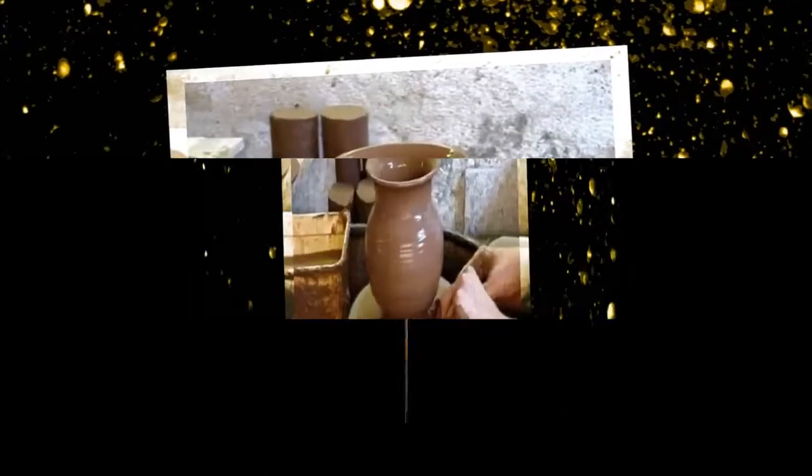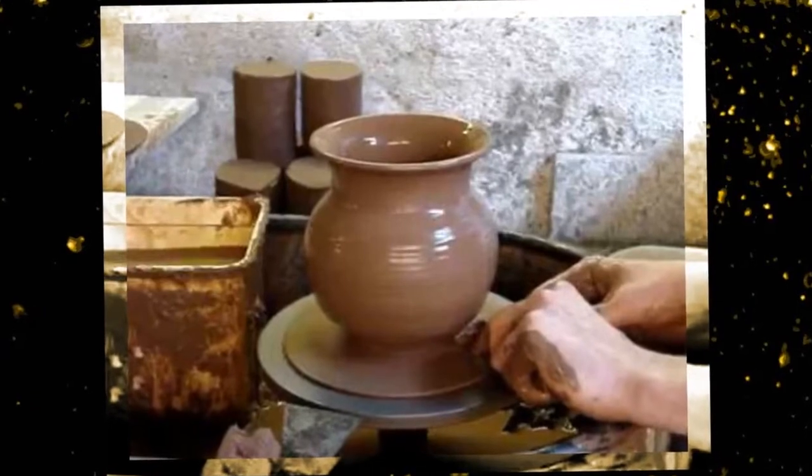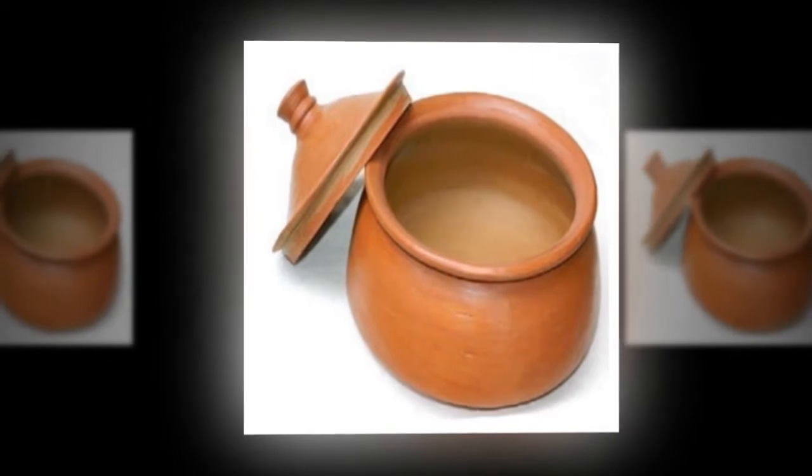Through these pores, water can slowly ooze out. These pores in the pot increase the surface area of water stored in it, and this increases evaporation.